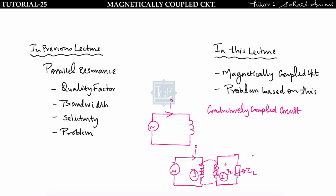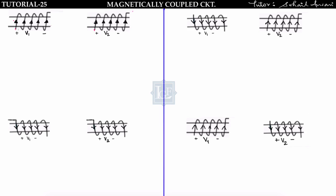In a transformer, the current induced in coil one produces flux. This flux cuts coil two, because of which voltage is induced in coil two, and in this way we can transfer power to any kind of load. These kinds of circuits are known as magnetically coupled circuits. Now let us consider one coil wound on an iron rod — this is coil number one and this is coil number two — and let current i1 flow in coil one and i2 in coil two.